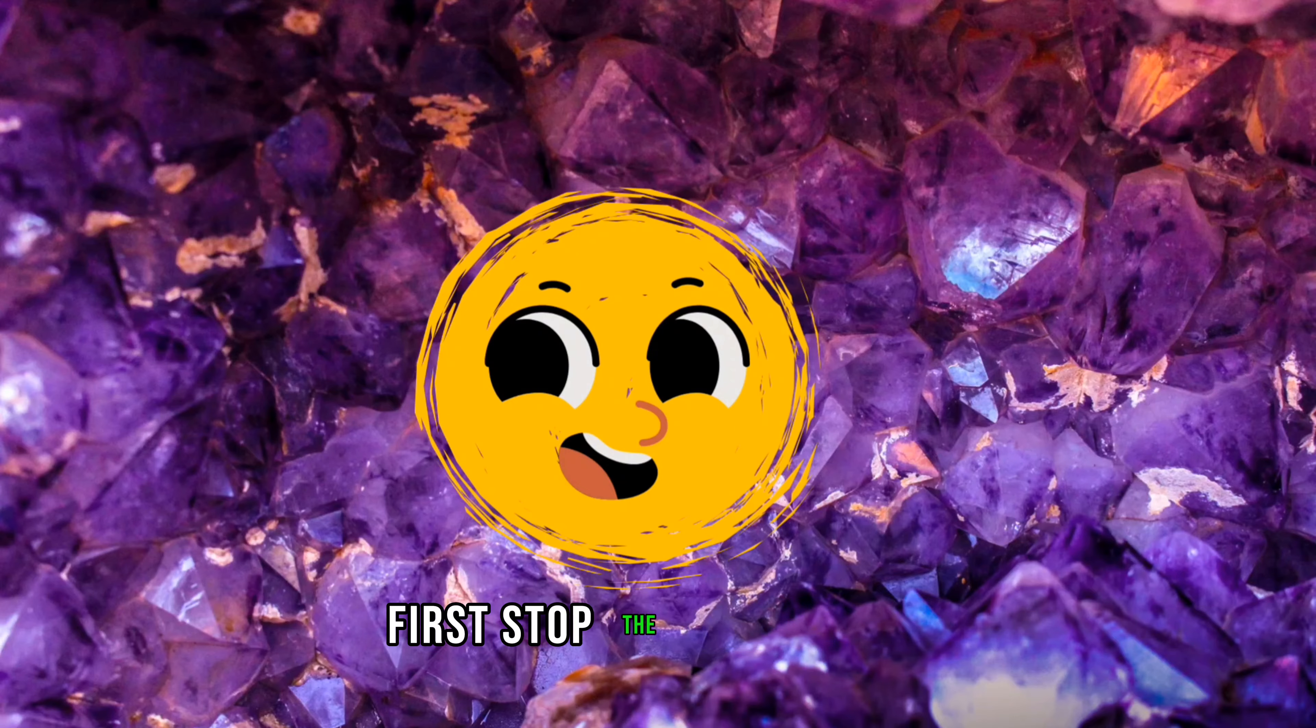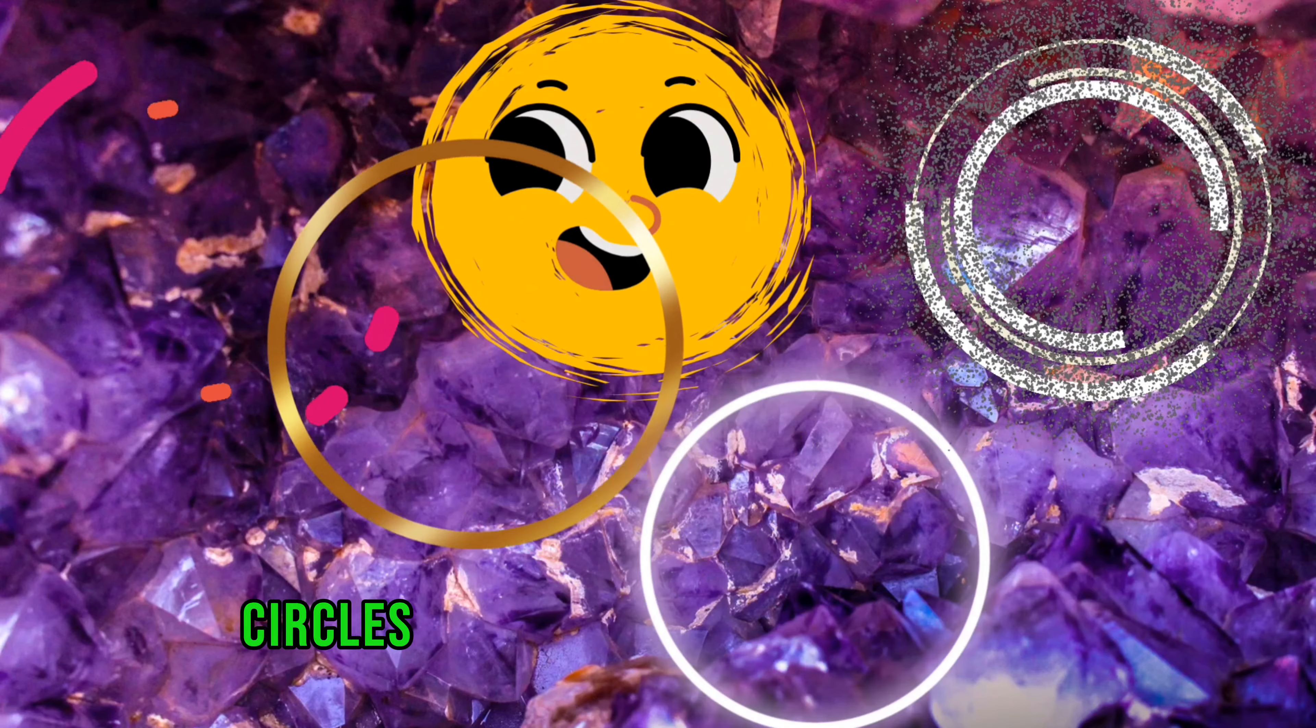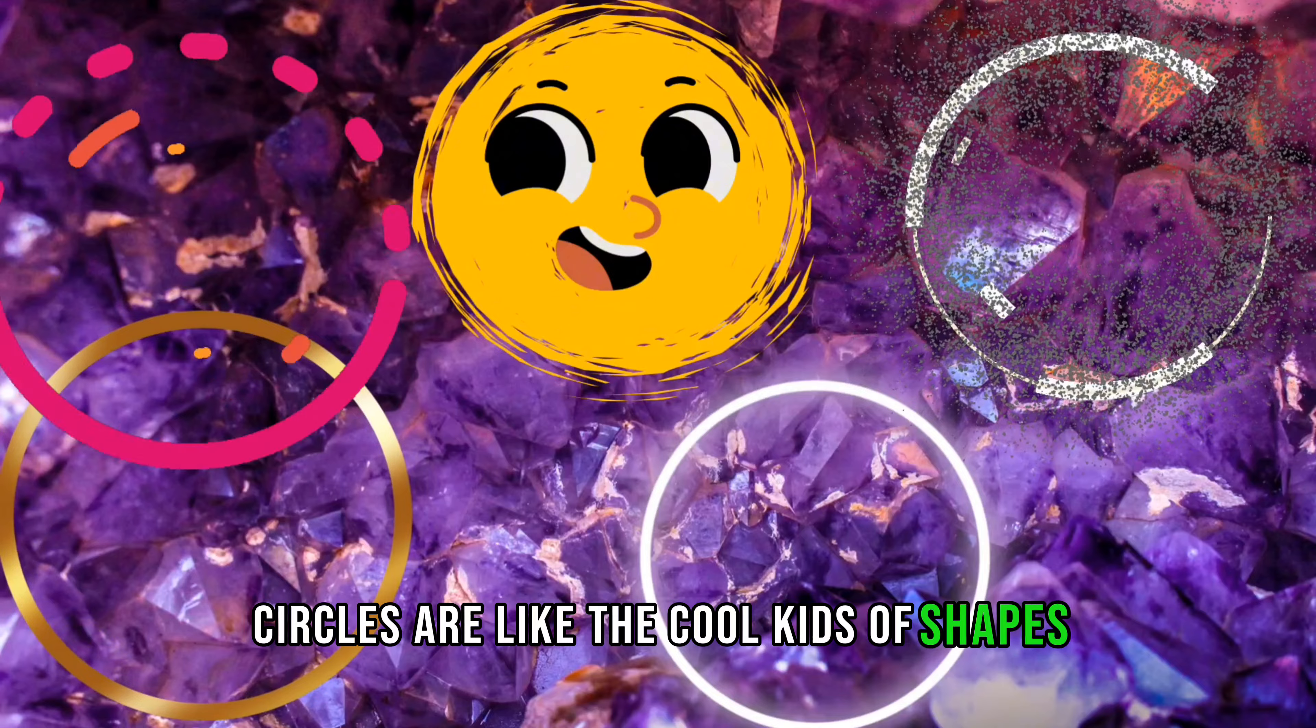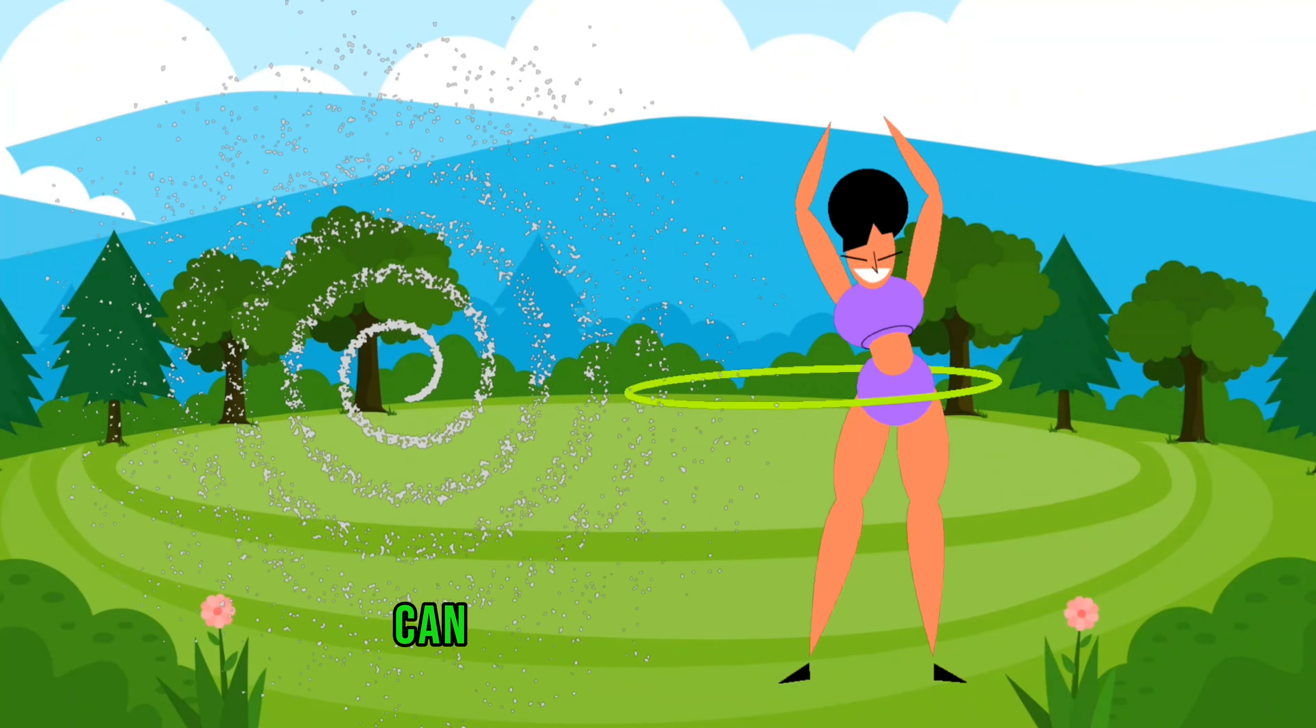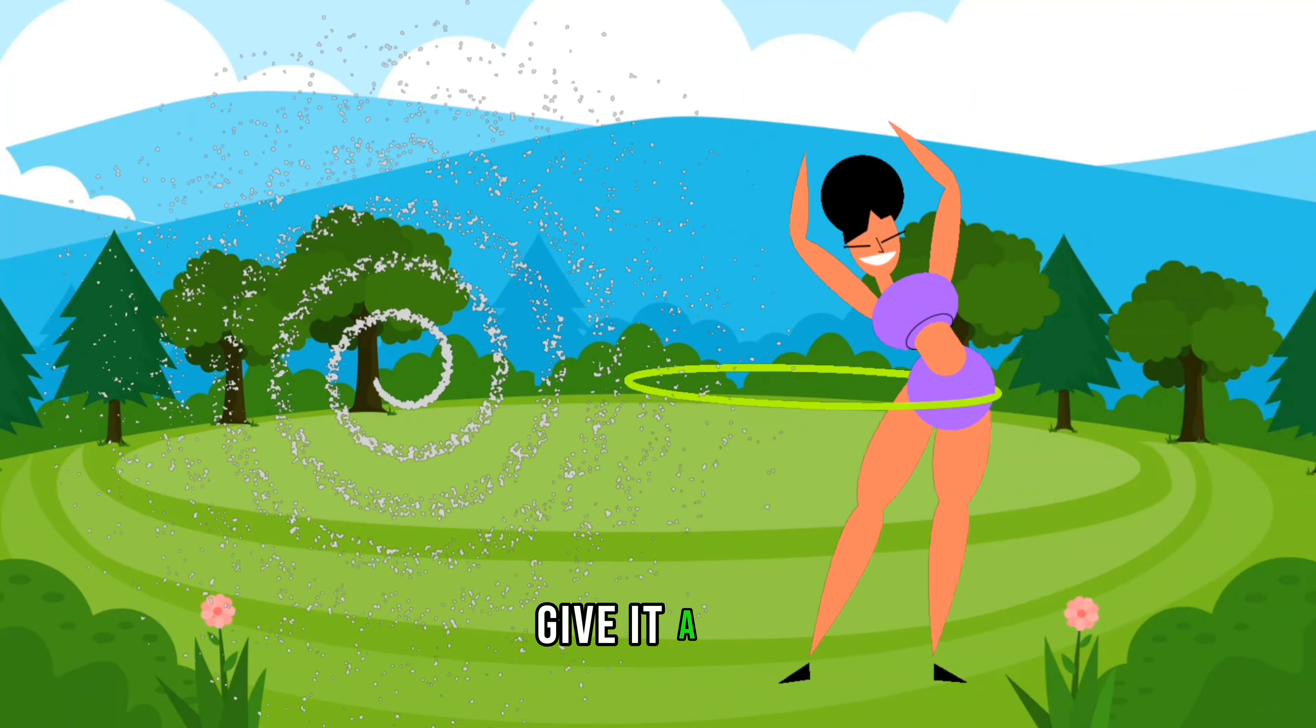Circle. First stop, the circle oasis. Circles are like the cool kids of shapes, always round and rolling. Imagine a circle doing the hula. Can you hula like a circle? Give it a try.